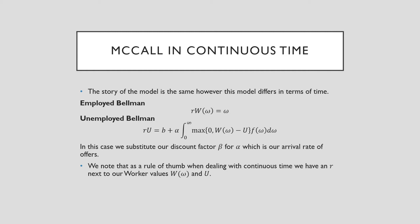Also, we substitute our discount factor, which would be in terms of periods, for alpha. Now that's true because we see in our employed Bellman that we don't have this next period sort of thing, because if it was discrete, we would go and have an added beta W(omega) in our employed Bellman. So this is how we think about these equations in continuous time.